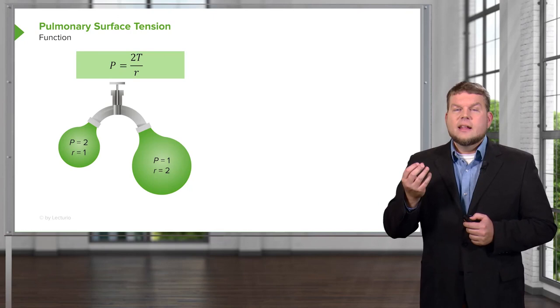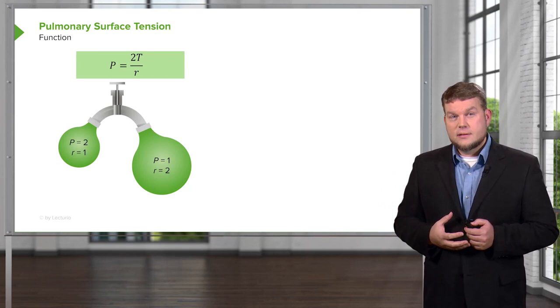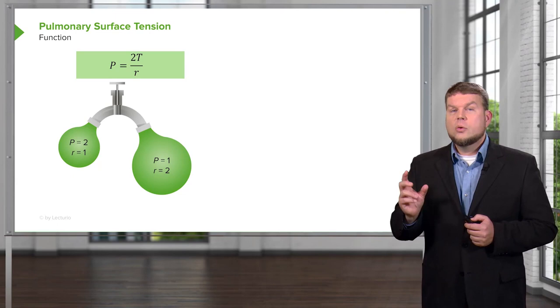Here we have two air sacs. The larger the air sac, the easier it is to inflate. The smaller the air sac, the more surface tension it has.